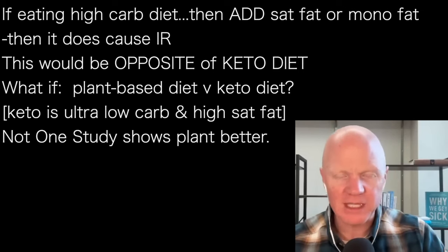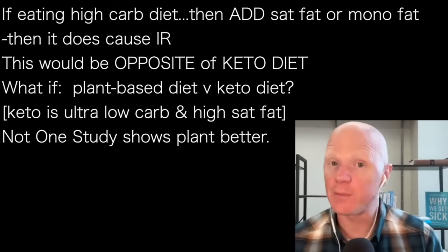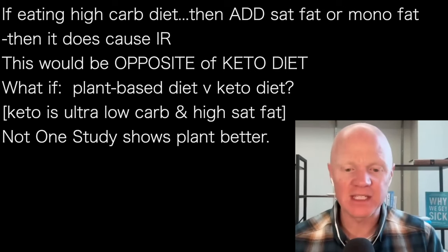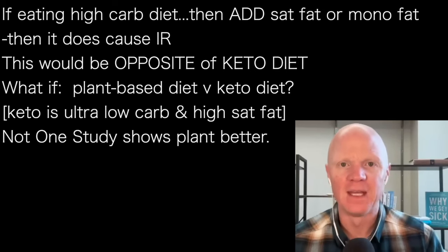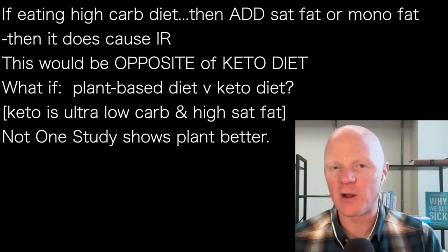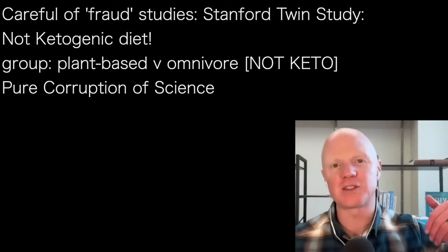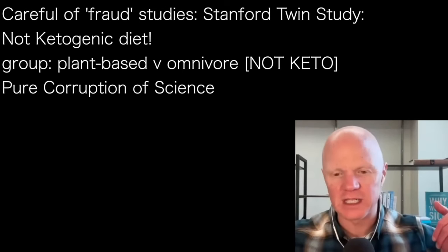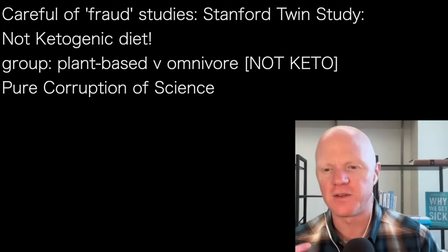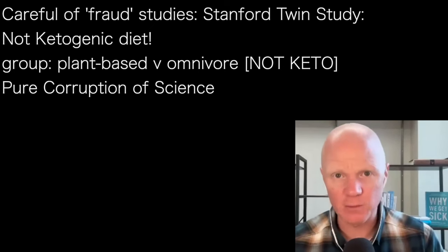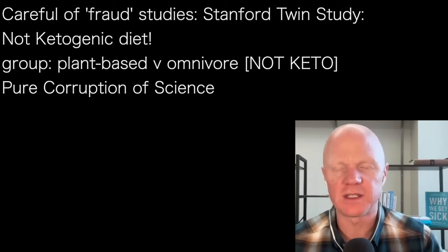So these plant-based advocates that are vilifying saturated fat are just selectively taking some lines of evidence and applying it to fit their ideas. When you compare a plant-based diet to a ketogenic diet — which generally sits on the opposite end of saturated fat consumption — there is not a single study showing that a plant-based diet outperforms the ketogenic diet. That is not the same as the Stanford twin study that was just published, which was not ketogenic. They had a plant-based group versus an omnivore group eating lasagna and hamburgers — not ketogenic whatsoever — so it was heavily skewed to find the result they wanted. And of course, immediately Netflix made a documentary about it. I can highlight that study in a future metabolic classroom.